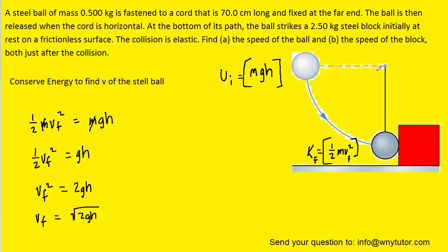Notice that the height h would simply be the length of the string, which is given to us in the question as being 70 centimeters. We'll have to make sure to convert that to meters by multiplying by 10 to the minus 2. So we'll go ahead and plug in the known value, and we can see that the final speed of the ball is equal to approximately 3.7 meters per second.